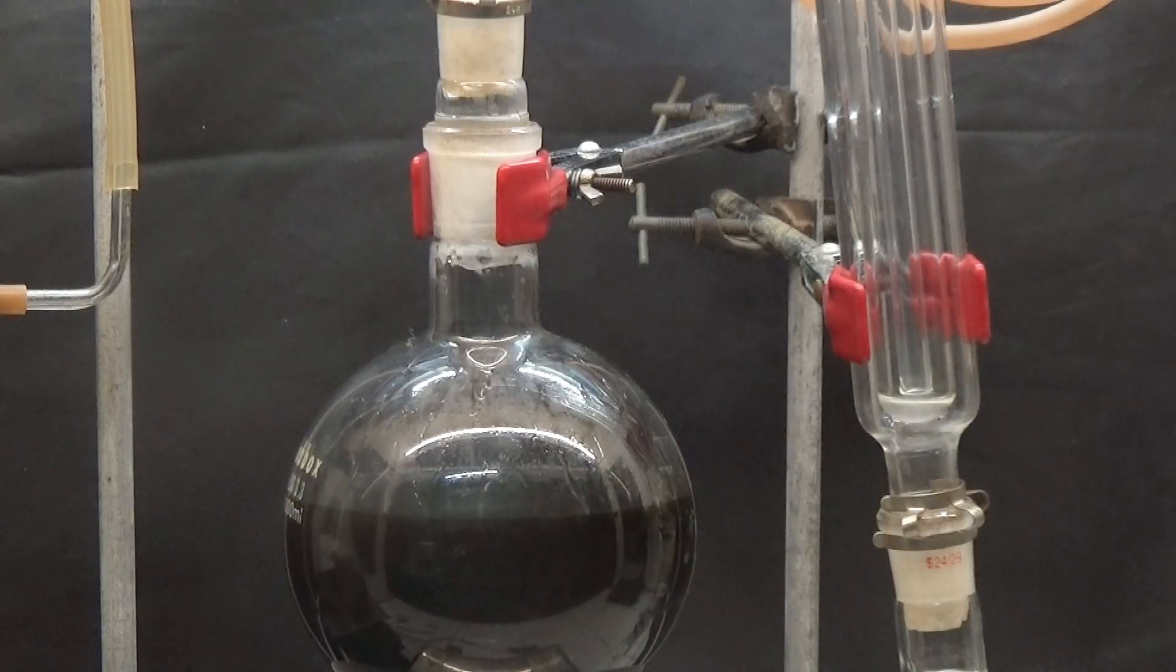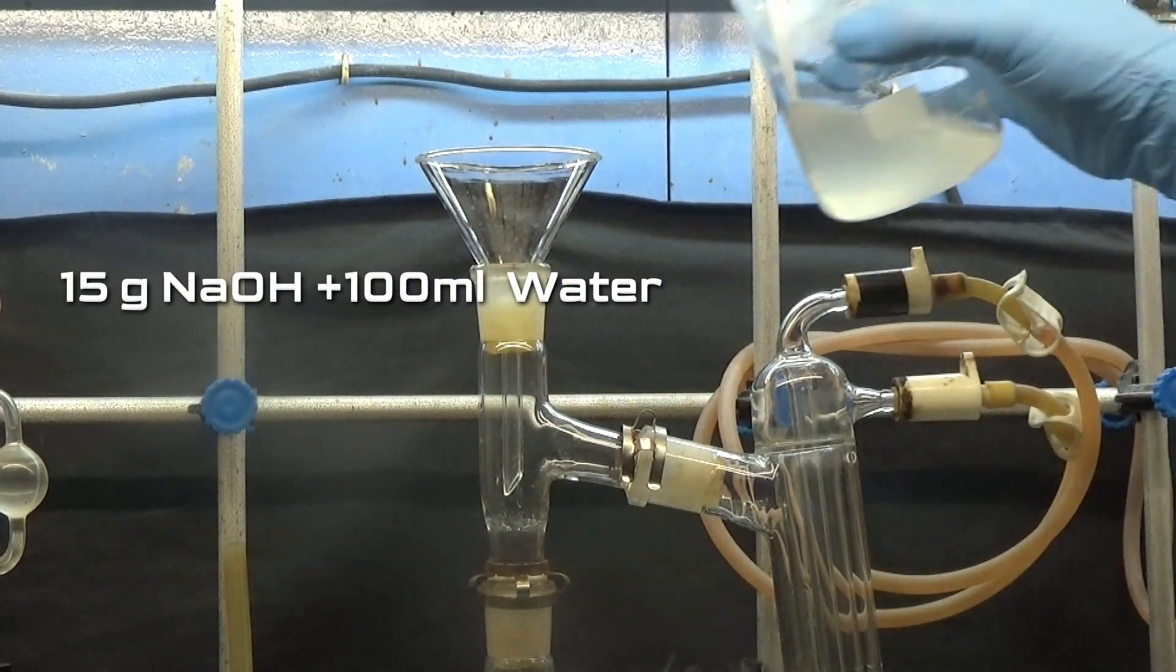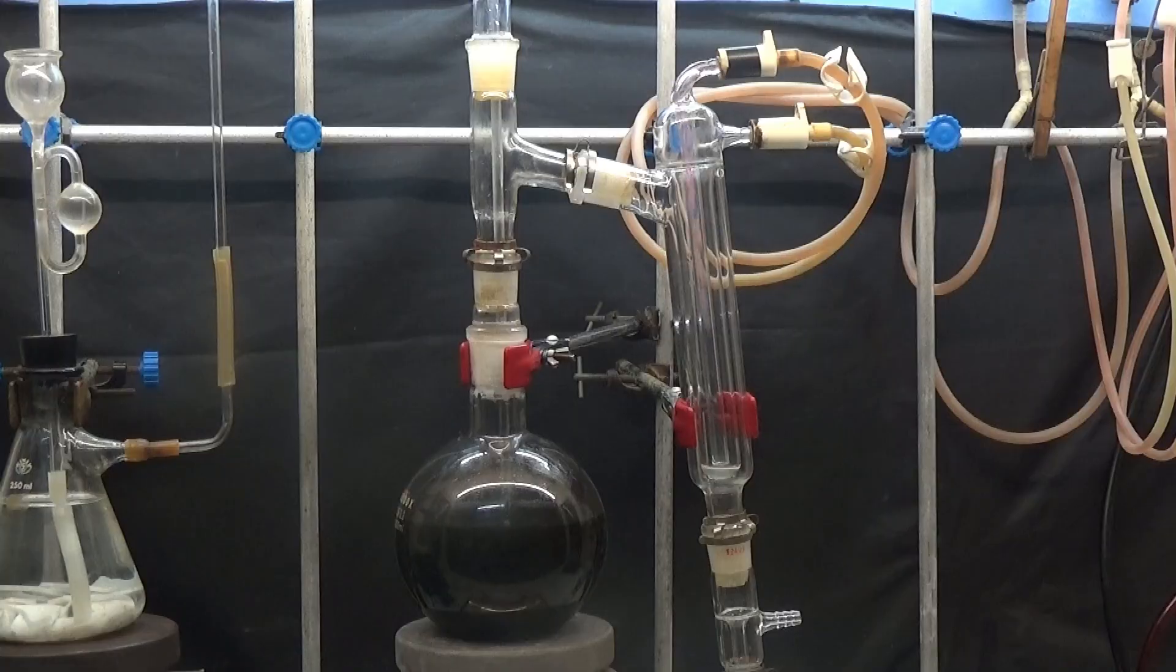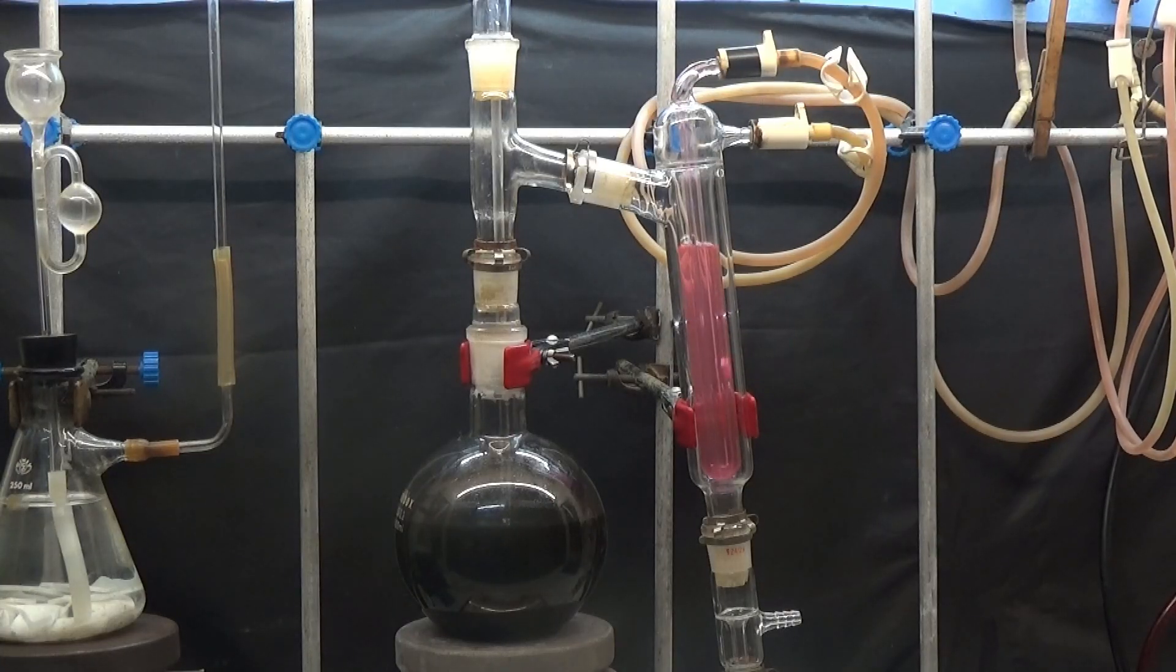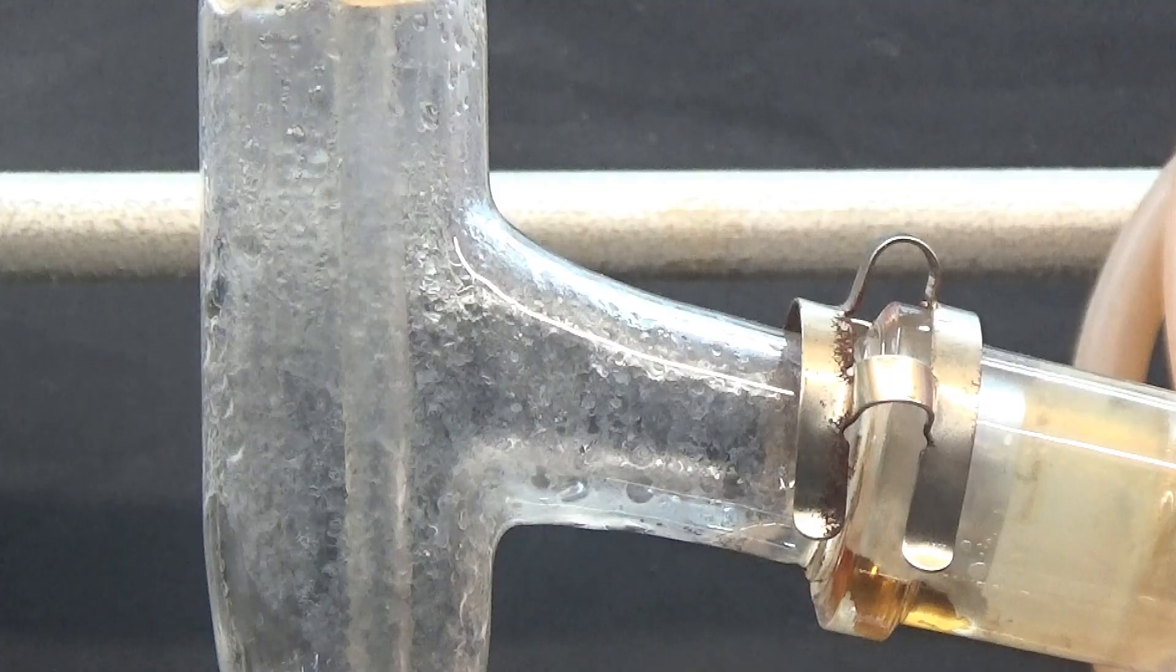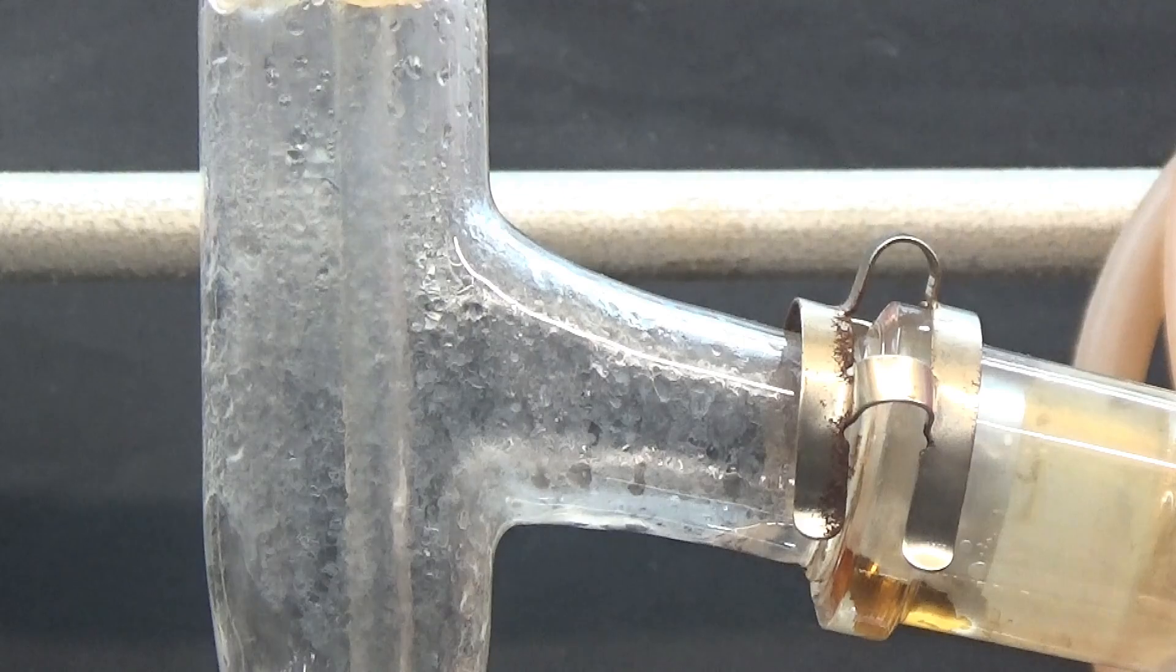The filtrate is put in a 1000 milliliters flask and a solution of 15 grams of sodium hydroxide diluted in 100 milliliters of water is added. Set up a simple distillation apparatus and slowly distill most of the methanol. Once it is observed that white colored oil distills, the distillation is stopped.